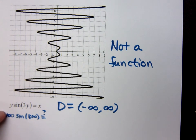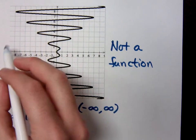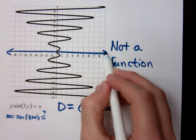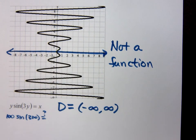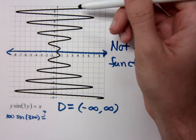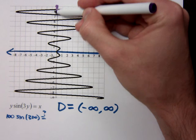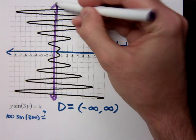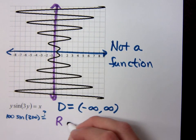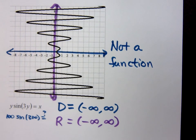Does that make sense? So you see this is going to include everything here. What about your range? I think the range is less easy, right? You can make the same assumption — it just keeps on going and going. I don't see anything where it's stopping. So my range should be everything. I'm pretty safe saying the range is from negative infinity to infinity.